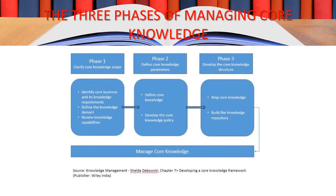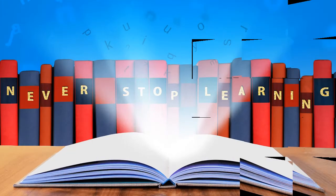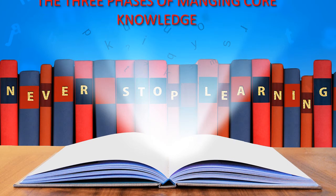The graphical picture of the three phases of managing core knowledge is represented in this slide. Phase one is clarifying core knowledge scope, with subheadings: identify core business and its knowledge requirements, define the knowledge domain, and review knowledge capabilities. Phase two is defining core knowledge parameters, which includes defining core knowledge and developing core knowledge policies. Phase three is developing the core knowledge structure, which involves mapping core knowledge and building the knowledge repository — managing core knowledge step by step.